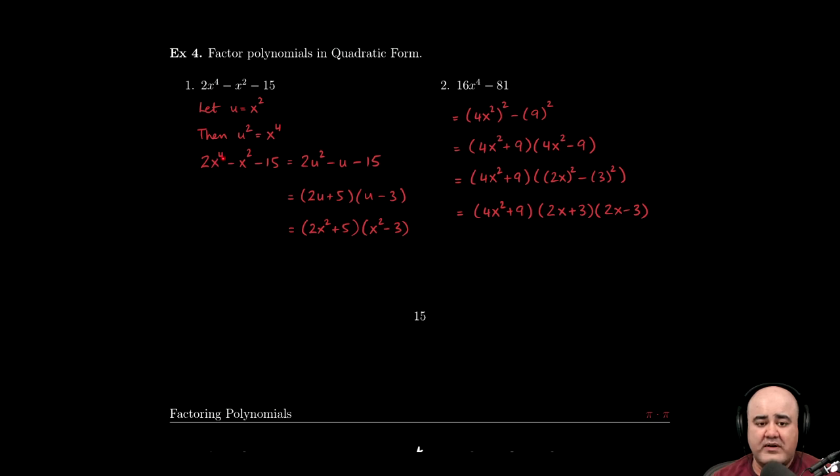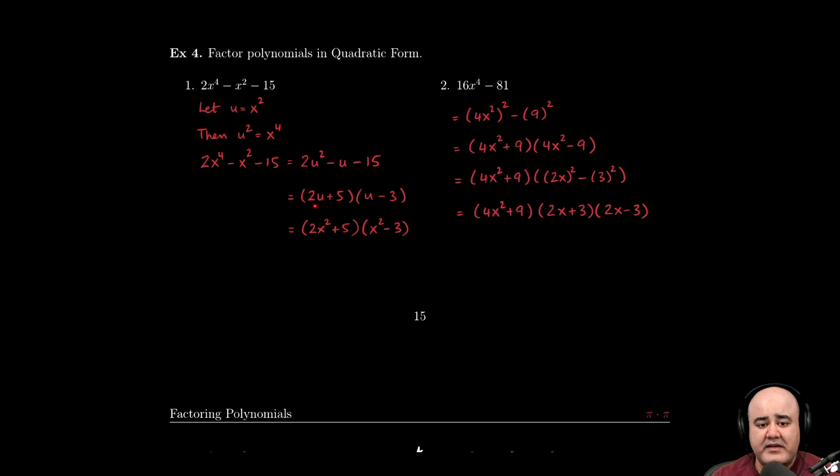2x to the fourth, well, wherever I have an x to the fourth, I can replace it with u squared. Minus x squared, well, x squared was u, so minus u. And then the 15 didn't have any x squares in it, so the minus 15 just comes along for the ride. Now at this stage, pause the video. Make sure that you're able to go from here to these factors independently. I used splitting the middle. You can also do a guess and check, but make sure that you pause the video at this stage. Make sure you're able to go from here to here independently.